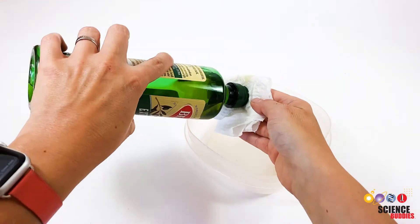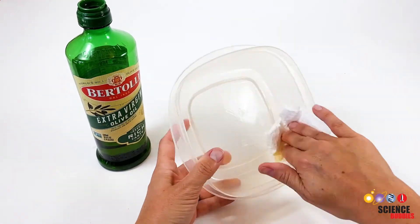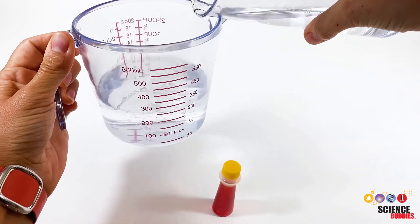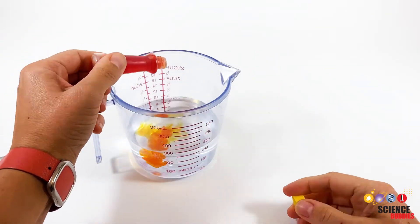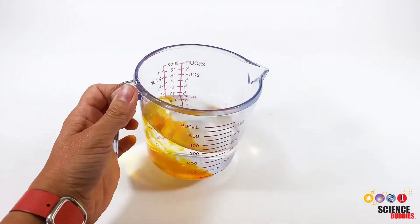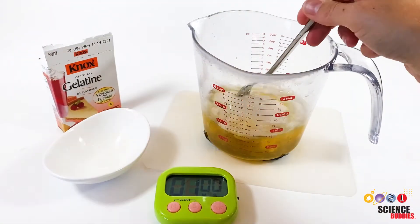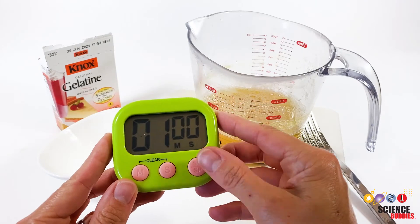Grease the insides of the baking pans or plastic containers with a paper towel and a few drops of oil. Pour 250 milliliters of water into the measuring cup, and add a few drops of food coloring. Be sure to use a color other than red. Dissolve 35 grams of unflavored gelatin powder in the colored water. Stir well and let it rest for one minute.